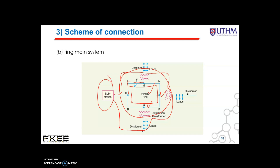At the same time, continuity of supply is maintained to all consumers via the feeder S. If section SLM is cut off for maintenance, the consumer can still get electricity supply from S, R, Q, P, and L, M. That is the advantage of the ring main system.